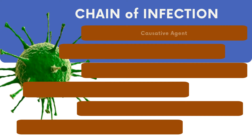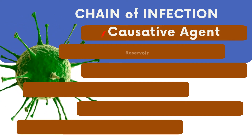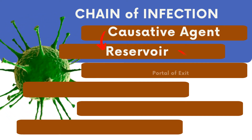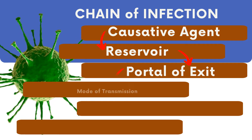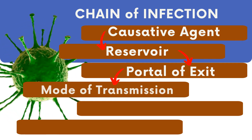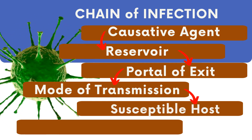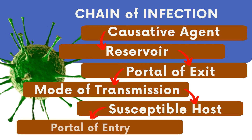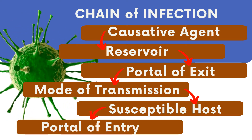The chain of infection consists of six links: causative agent, reservoir, portal of exit, mode of transmission, portal of entry, and susceptible host.